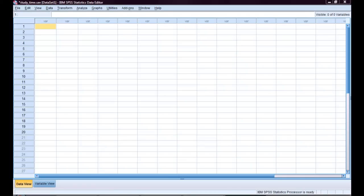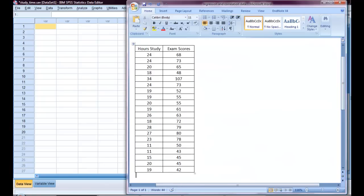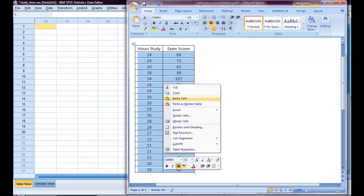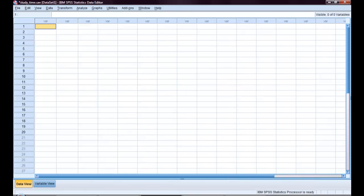The first thing we want to do is get the data into the data editor. So I'll go to my Word document and I will highlight all of my data, right click, choose copy, go back, click into the data editor, right click again and choose paste.